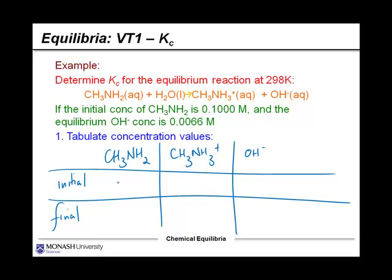So we start off with some of this methylamine and what I'm going to do is I'm going to tabulate the initial and then the final concentrations. So at first, we start off with 0.10000. And then we don't have any of this stuff.